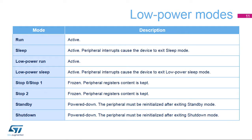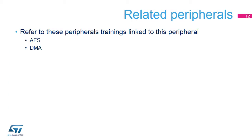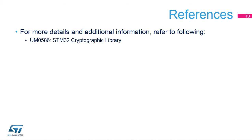Here is an overview of the status of the hash processor in each of the low power modes. Hash operations are not possible when the device is in stop mode. This is a list of peripherals related to the hash processor. Please refer to AES peripheral trainings for more about cryptographic functions, and to training on the DMA peripheral for information on how to configure the hash channel. For more details, please refer to the user manual available on our website.